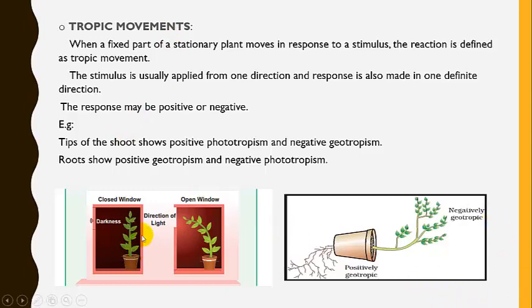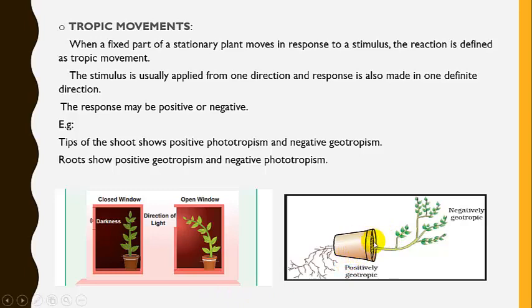In this diagram, one plant is placed near a closed window and another near an open window. The open window brings light into the room, so the plant curves towards the light. In darkness, the plant does not curve or move. Similarly, a potted plant demonstrates positive and negative geotropism.